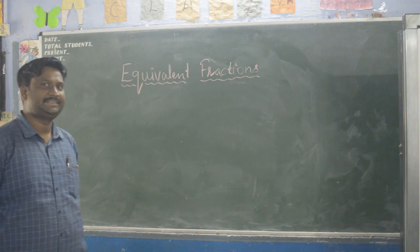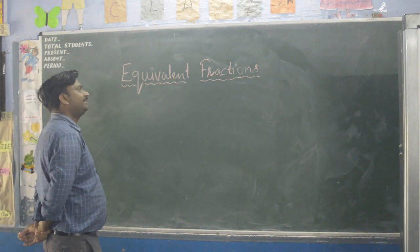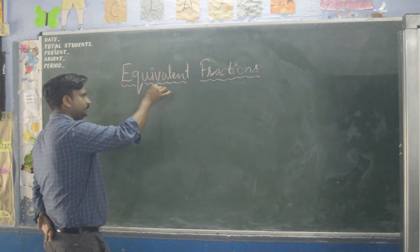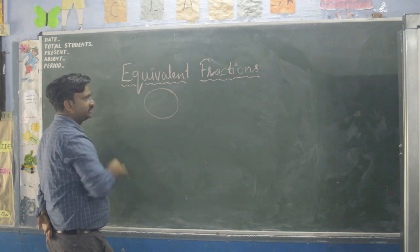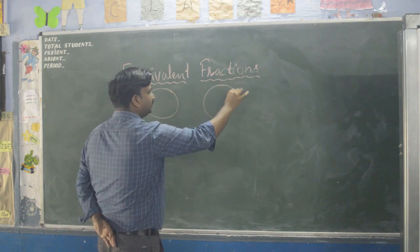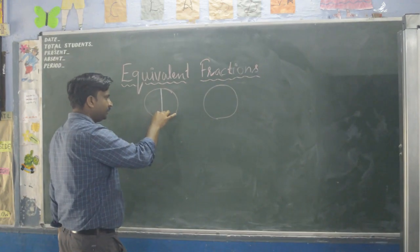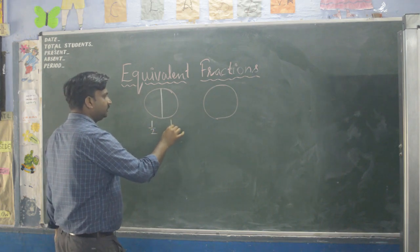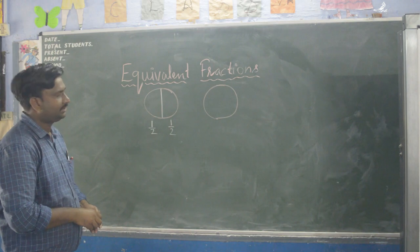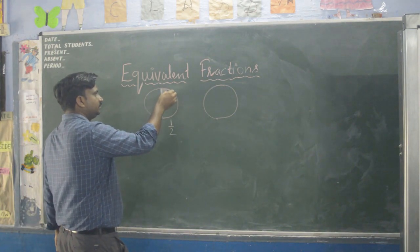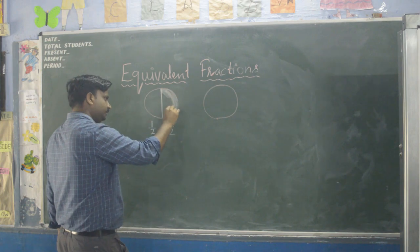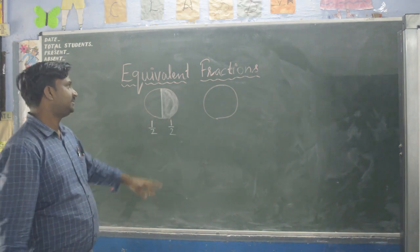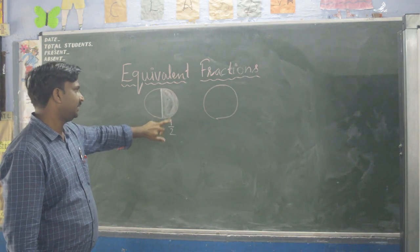Good morning students. Let us understand equivalent fractions. Suppose this is a circle and this is another circle — two equal parts, so it will be half, and this is also half. Let us say half portion, so what is the fraction of the shaded portion? One portion divided by total portions.